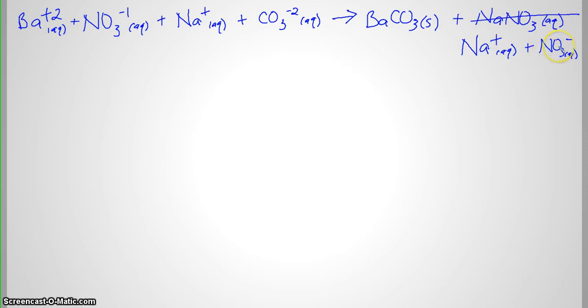To figure out what our spectator ions are, we want to look at the things that stayed the same, that didn't change. So here we have a sodium ion, here we have a sodium ion. So those are going to be spectator ions. Here we have nitrate, here we have nitrate, again spectator ions.